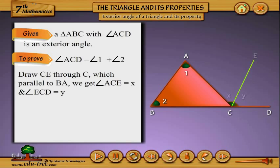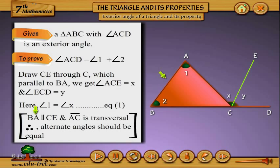Draw CE through C which parallel to BA. We get angle ACE equals x and angle ECD equals y. Here angle 1 equals angle x, we call it equation 1. BA parallel to CE and AC is transversal, therefore alternate angles should be equal.